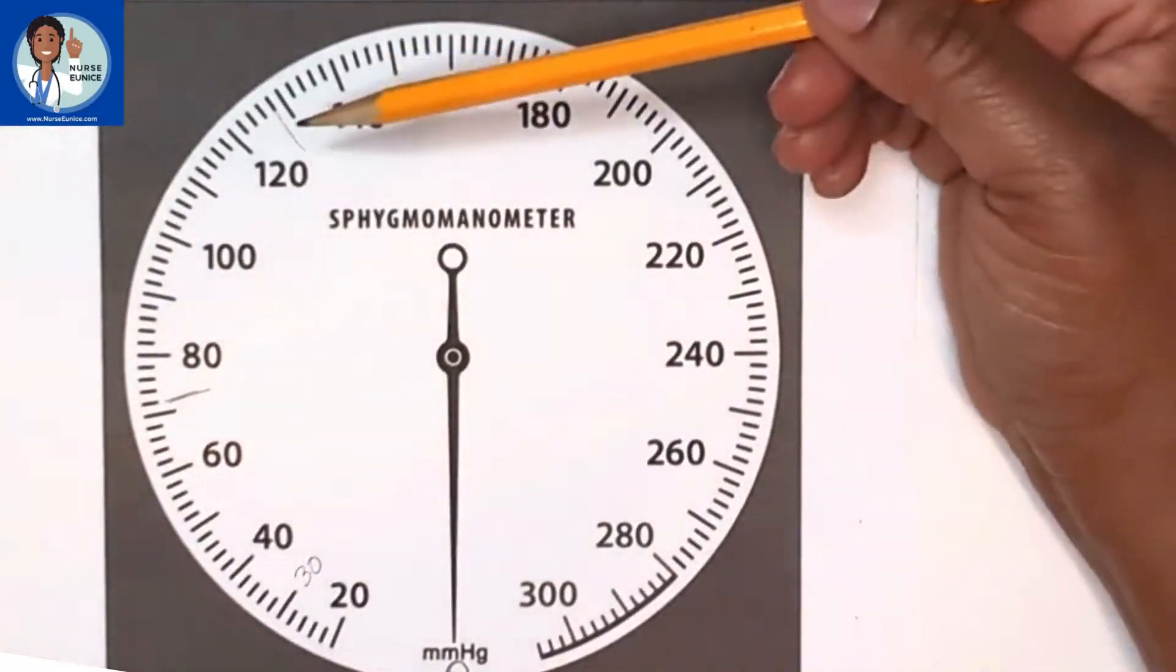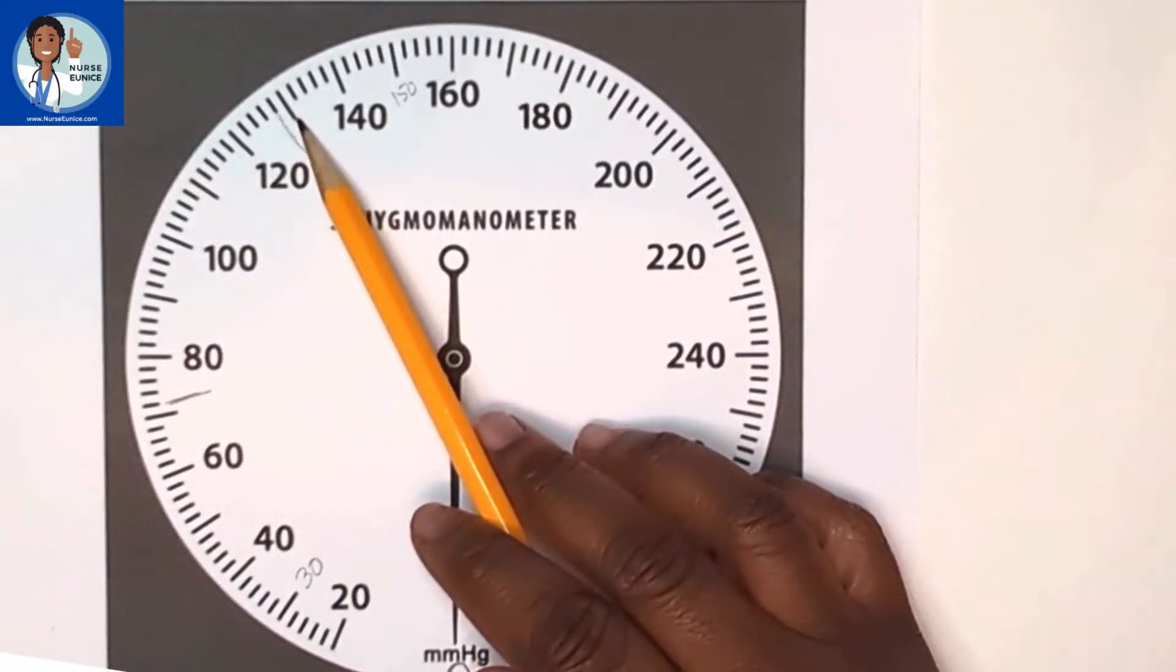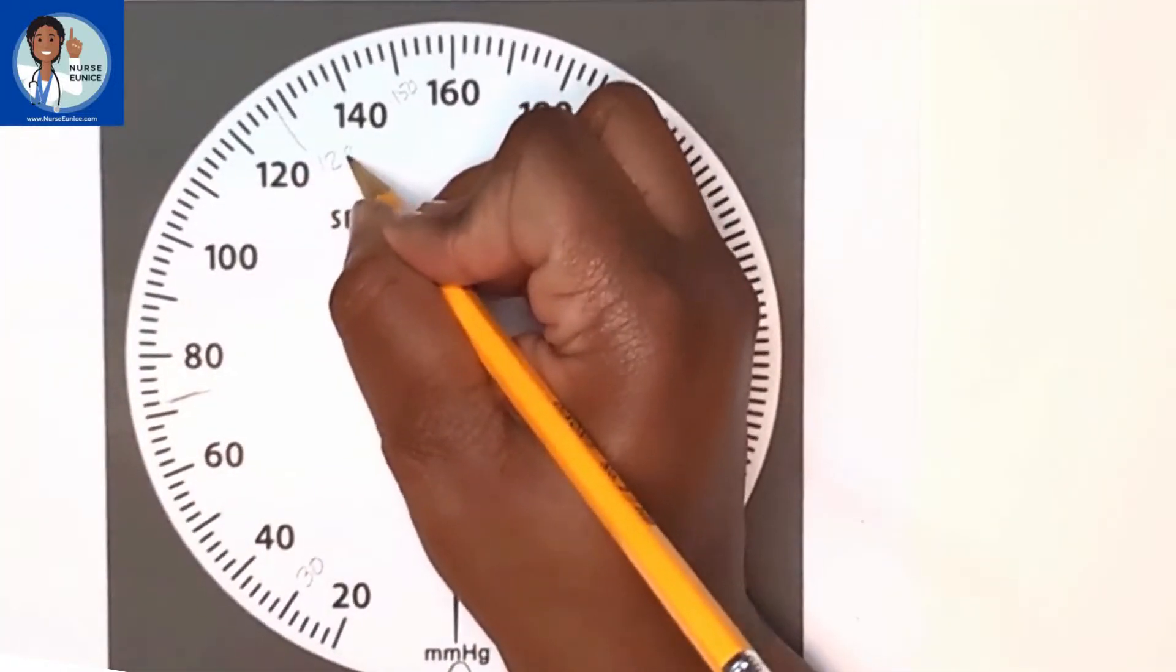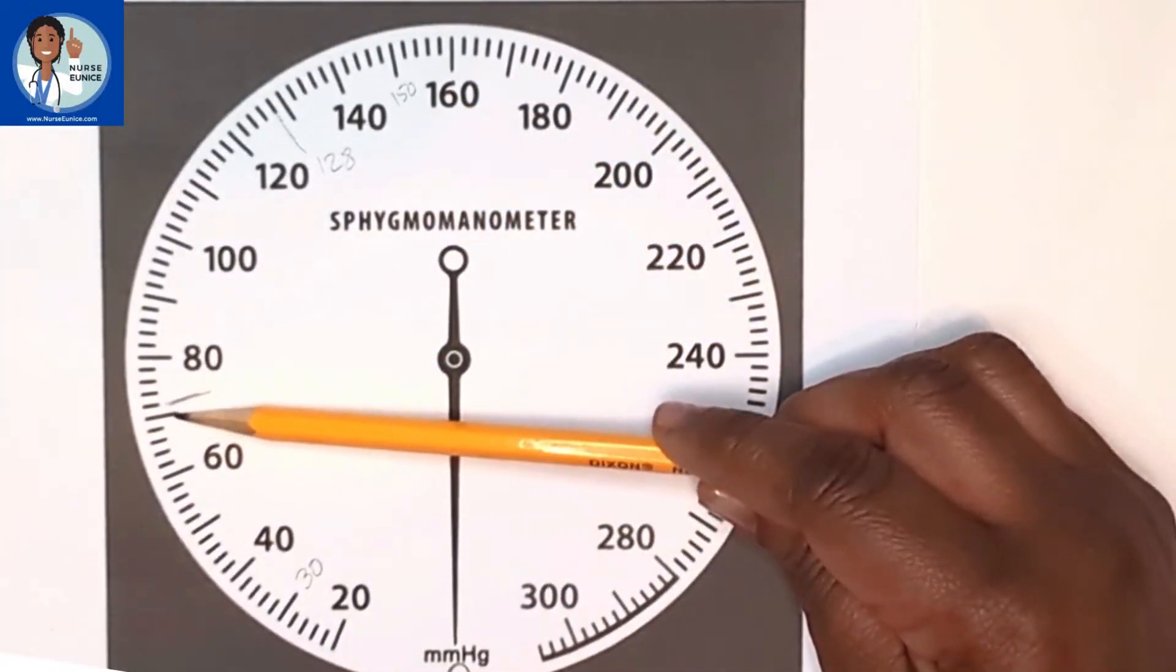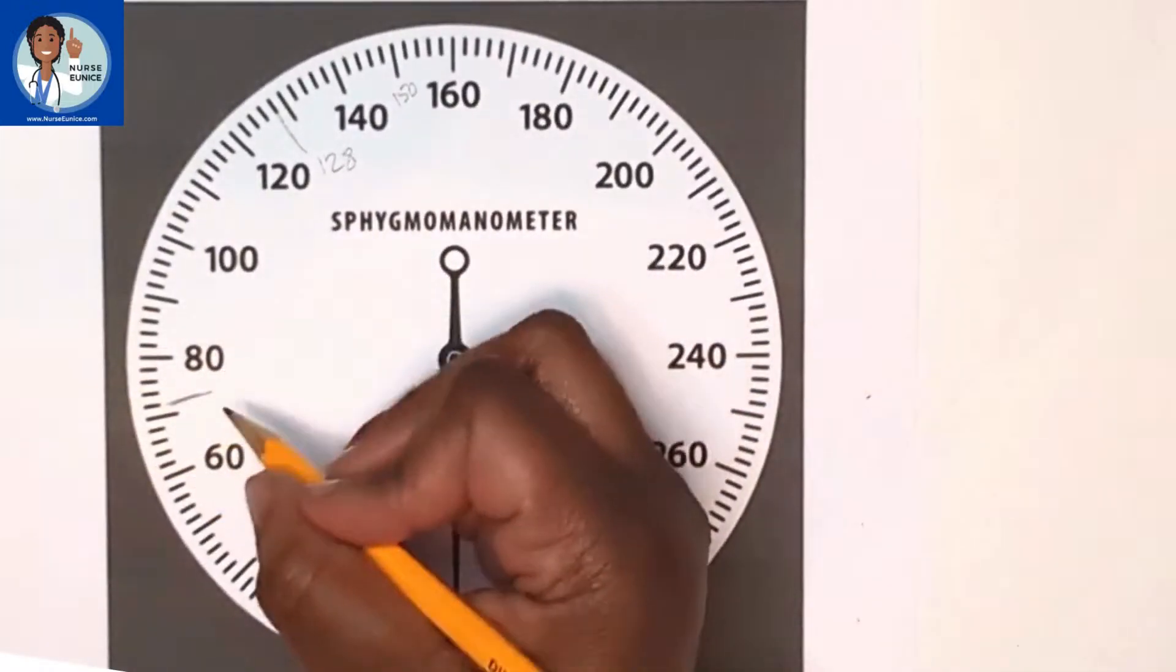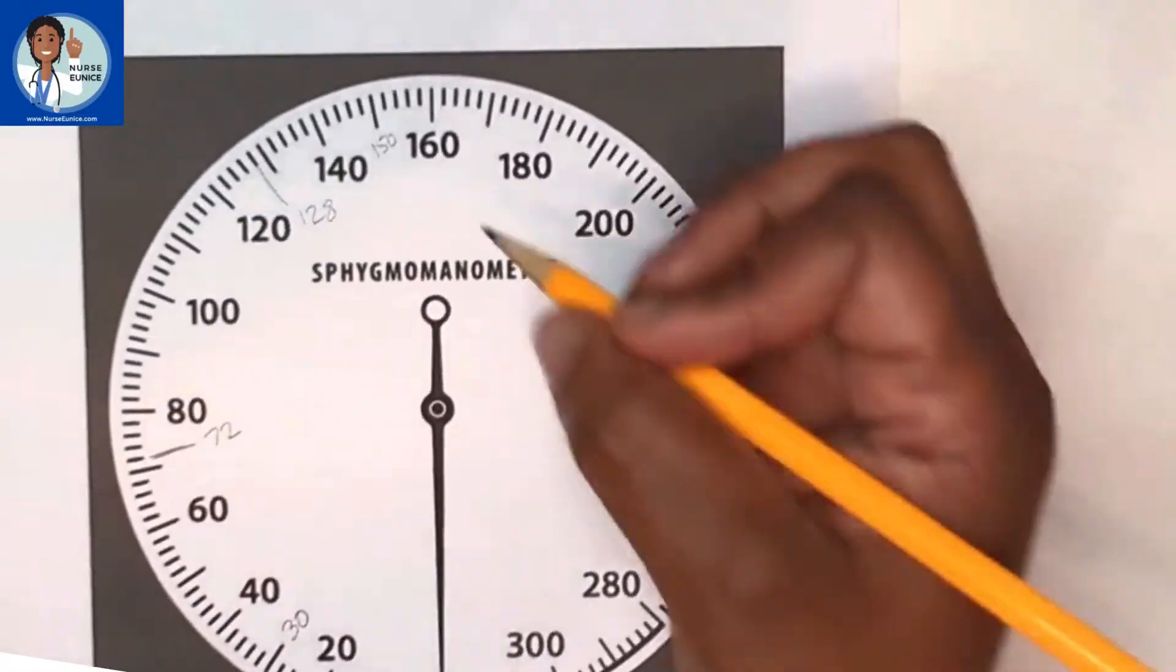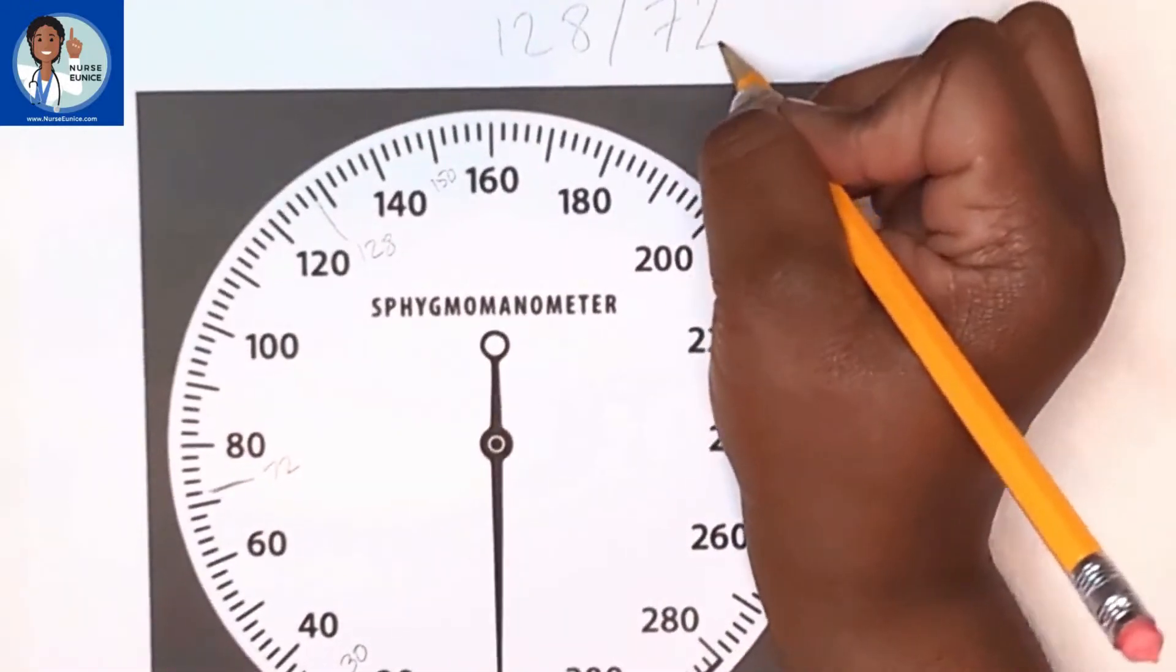You remember where you actually heard your sounds. One line below this dark line would represent 128. And then one small line above this line, if this was 60, this would have to be 70, that would make it 72. So if you were writing this blood pressure down, you charted the blood pressure being 128 over 72.